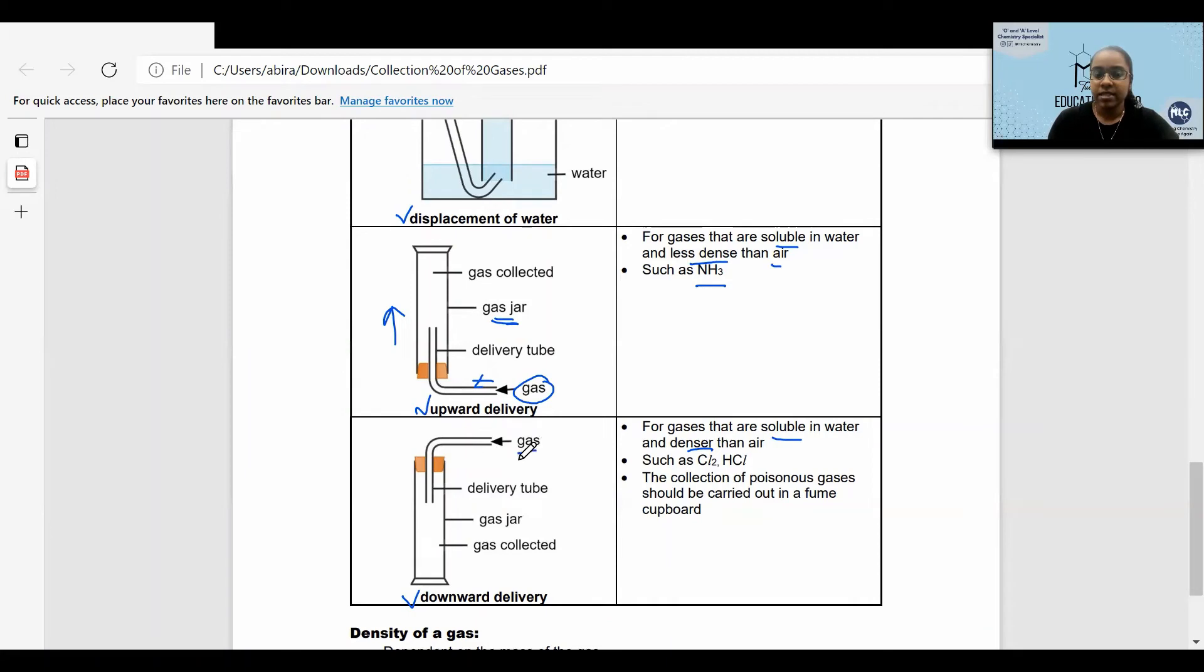Your gas is supplied to your delivery tube, and since your gas is denser than air, your gas will travel downwards into the gas jar and it will be collected. Some examples include chlorine and hydrogen chloride.